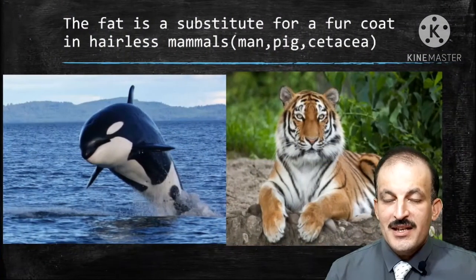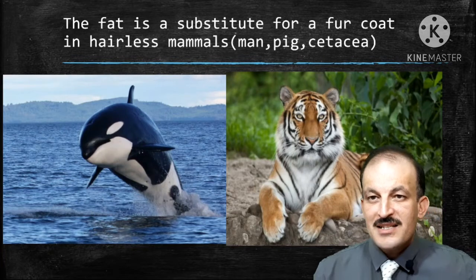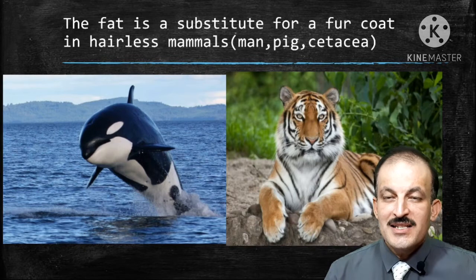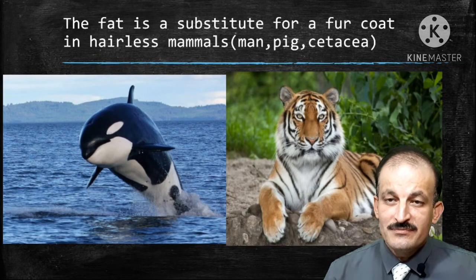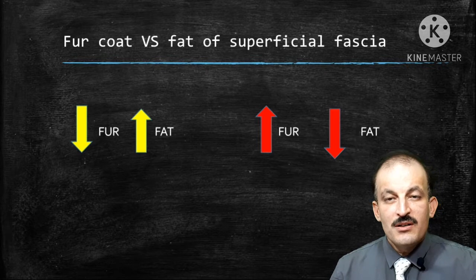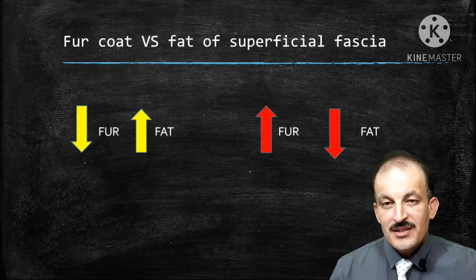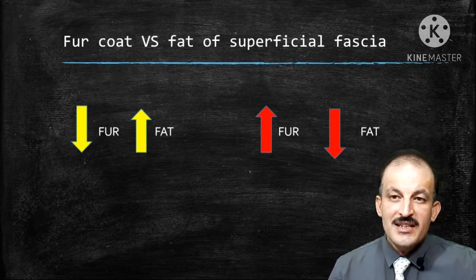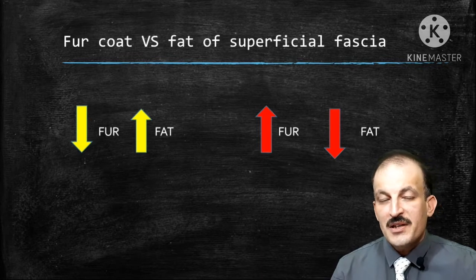The fat in the superficial fascia is a substitute for a fur coat in hairless mammals such as man, pig, and cetaceans. There is a reverse relationship between the fur coat and the fat of the superficial fascia: wherever there is a decrease in the fur coat, there is an increase in the fat of the superficial fascia, and vice versa.